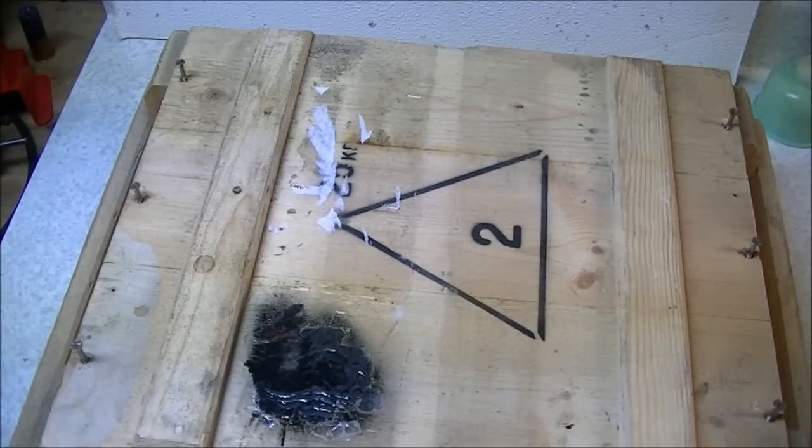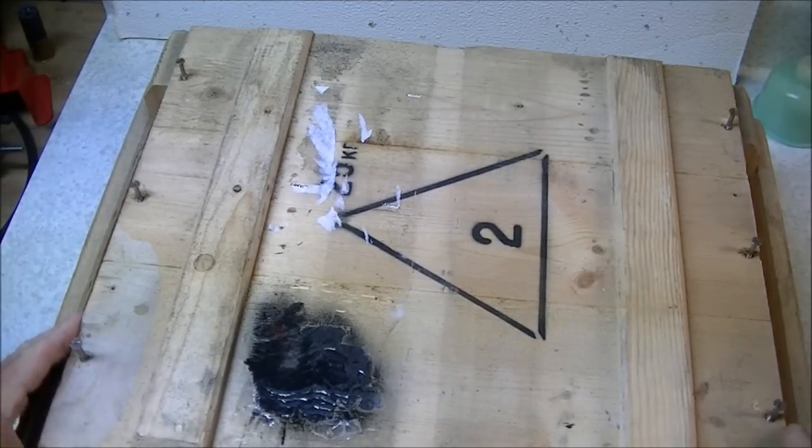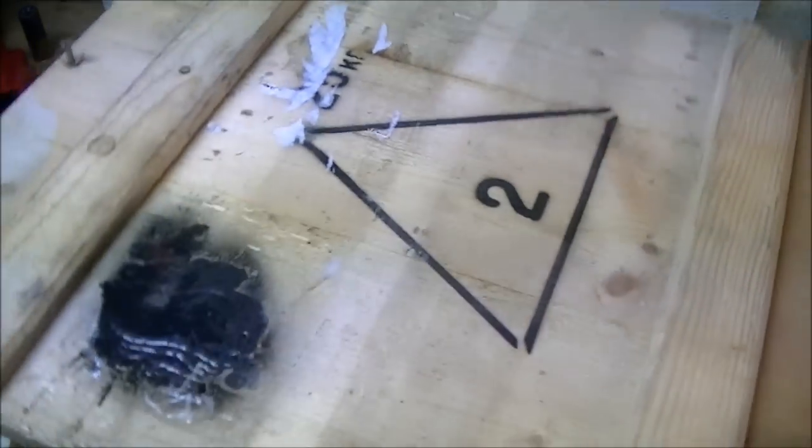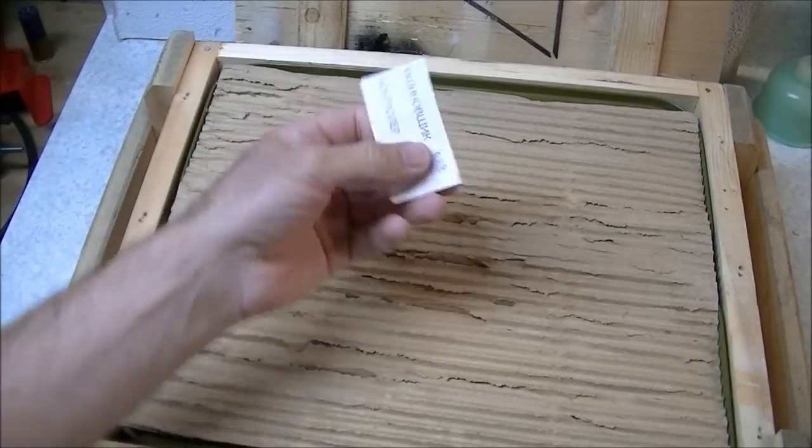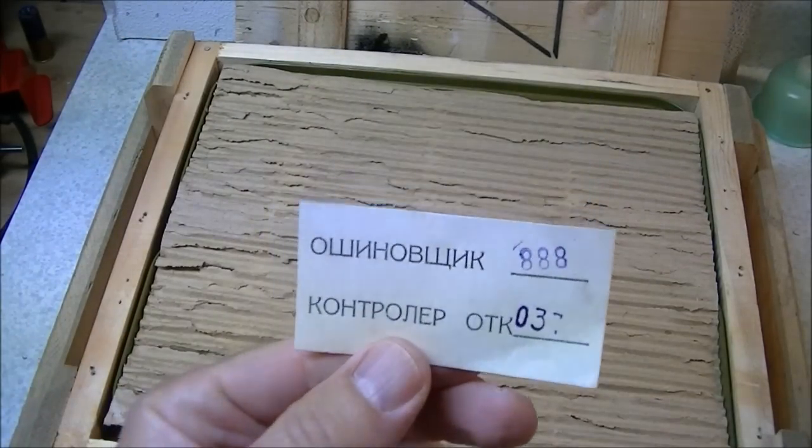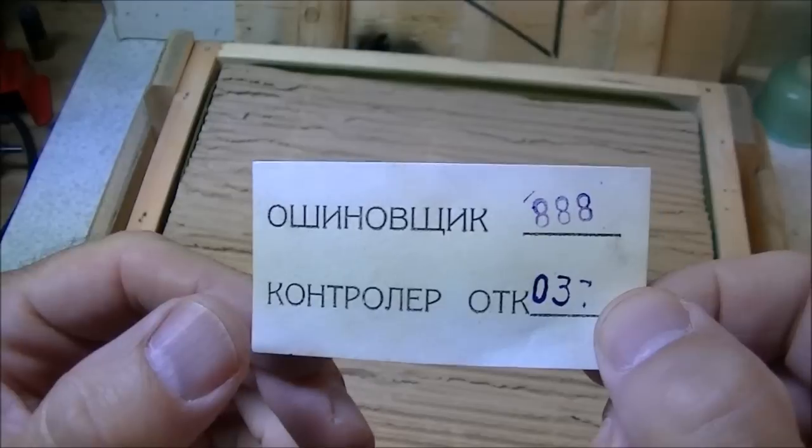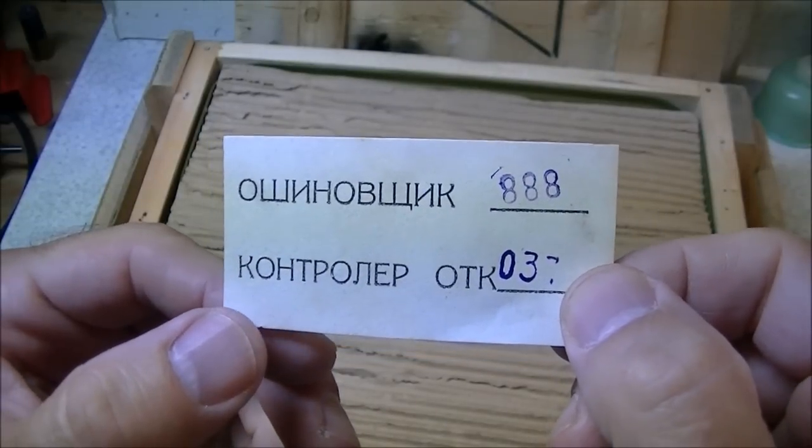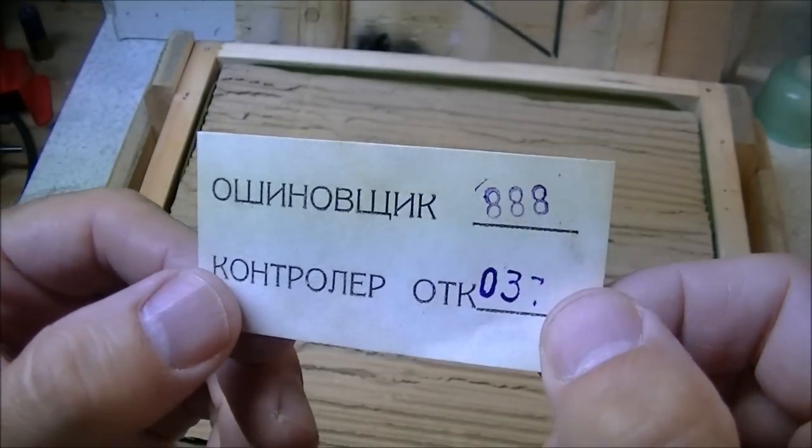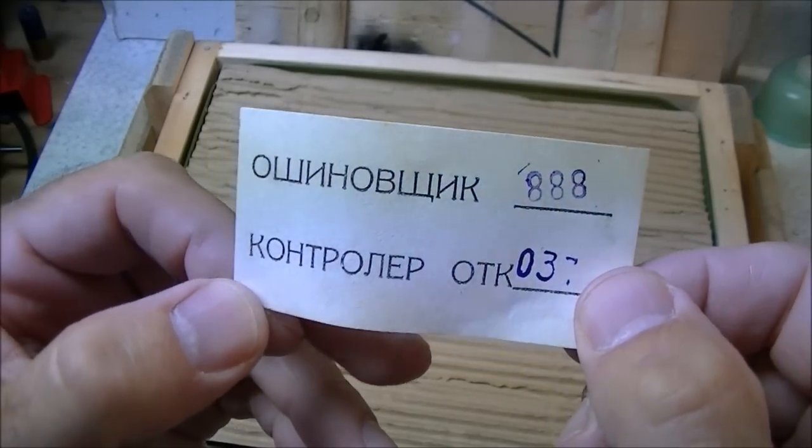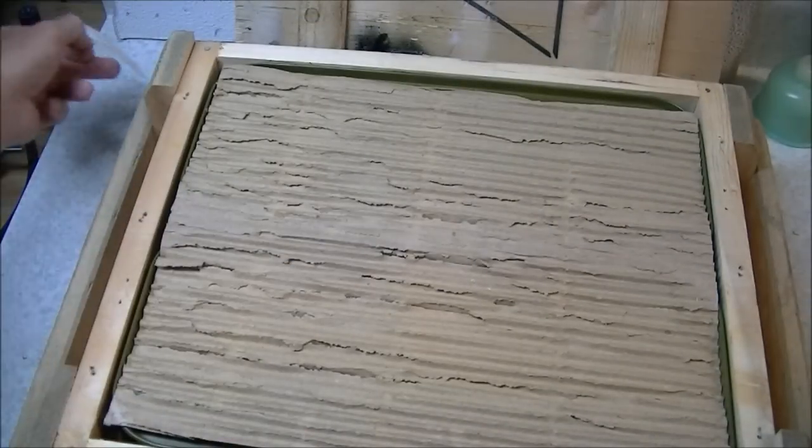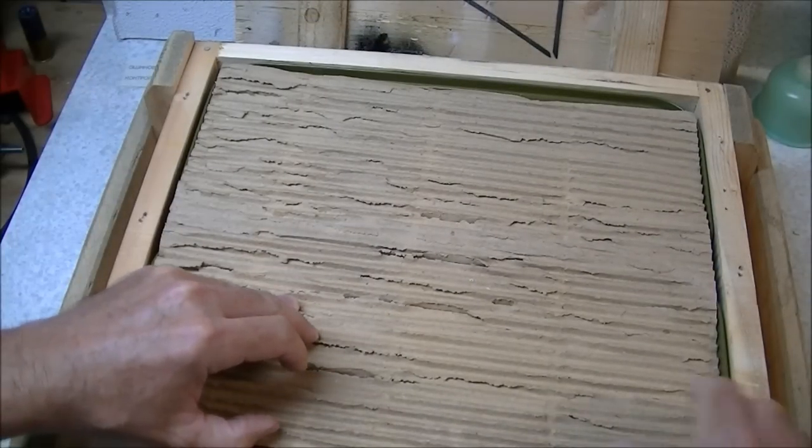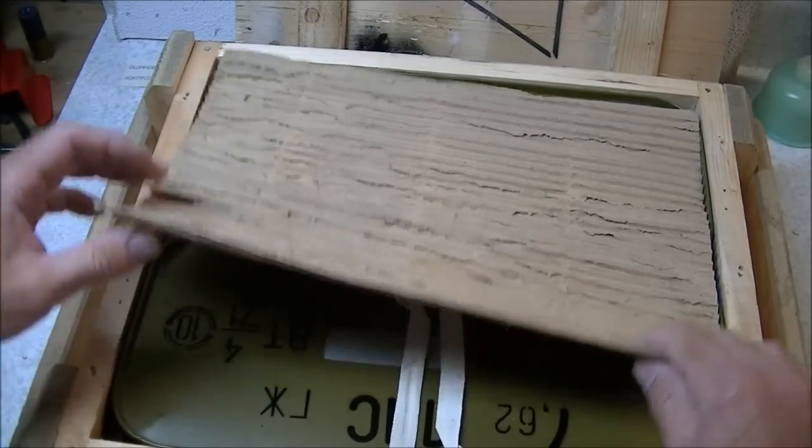There we go, six screws out. Take the top off, set that aside. We've got some sort of a packing label here. I don't speak that language, so I guess we're going to have to leave that to some of you folks who do. I would assume that's some sort of an inspection sticker or slip. You've got a piece of cardboard here in the top as a bit of a spacer.